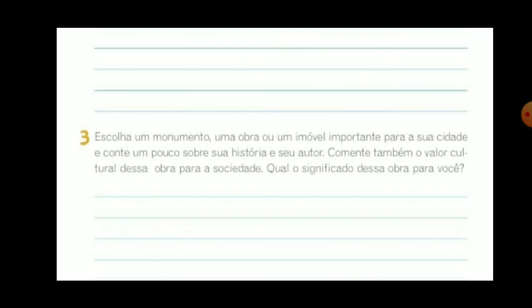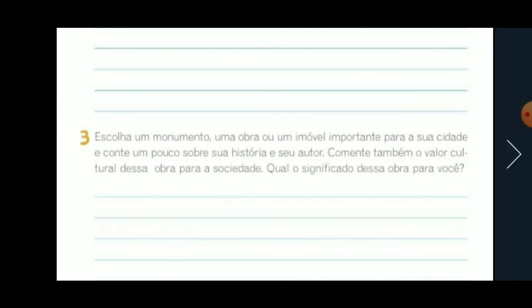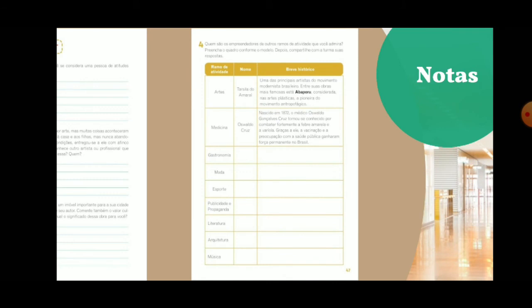Question 3: Choose a monument, work of art, or important building in your city. Our city, Goiânia, has several monuments. Write a little about its history and its author, and comment on the cultural value of this work for society and what significance this work holds for you. You'll do some research here — choose a monument, talk a bit about it, and share if it has meaning for you personally.